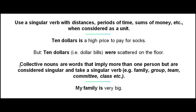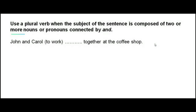Collective nouns are words that imply more than one person but are considered singular and take a singular verb — for example, 'family,' 'group,' 'team,' 'committee,' 'class,' etc. For example: 'My family is very big.' The word 'family' implies more than one person but is considered singular.